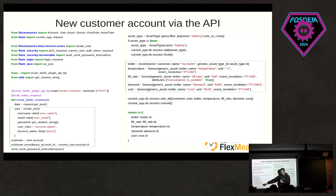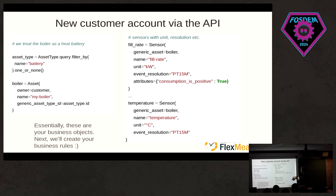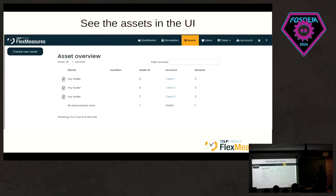If we want to create a new customer for this project — this is the endpoint we wrote as an example. We're creating a user and an account. And maybe the most interesting part: these are your business objects. We're creating the boiler as an asset and creating a couple of sensors. Here we really define and tell FlexMeasures how to handle this — what kind of units we're handling and the event resolution, so FlexMeasures knows what to do with them. If somebody called this endpoint, a new account was made, and it will end up in the FlexMeasures UI.